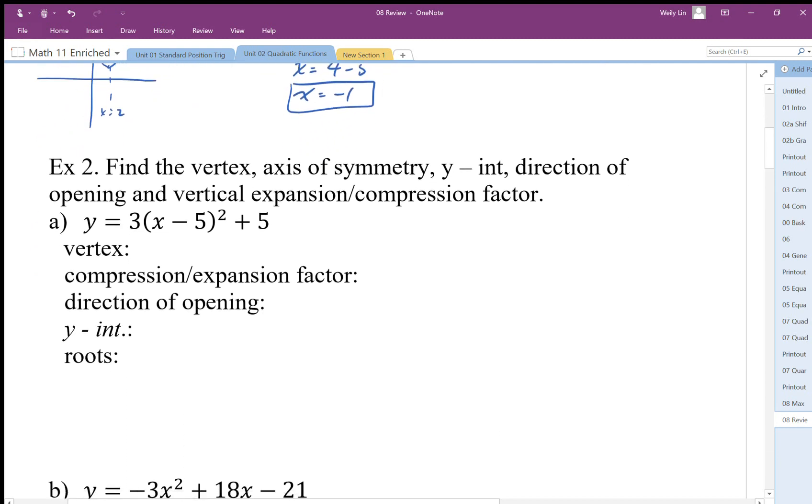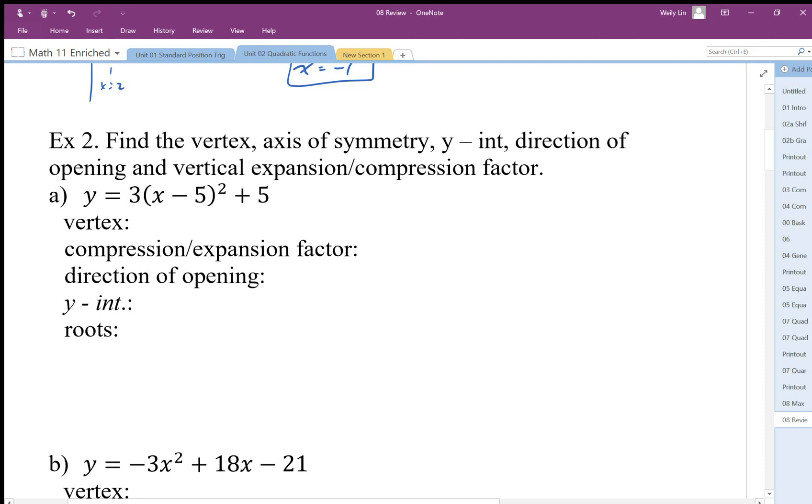Here again, we're given the vertex form. We want to find the vertex, axis of symmetry, y-intercept, and direction of opening, vertical expansion/compression factor. The vertex is generated from the vertex form, so if we don't have the vertex form, we have to find the vertex in a different way. The vertex is going to be at (5,5), that's the coordinate of the vertex.